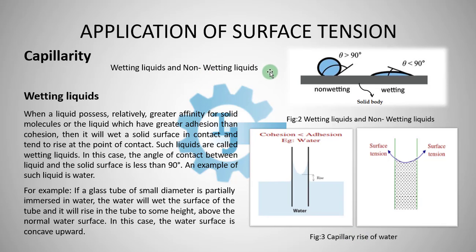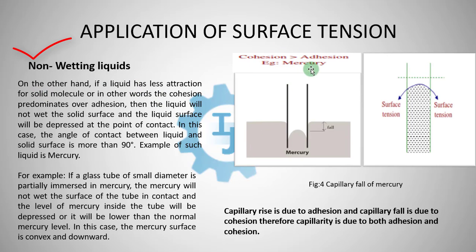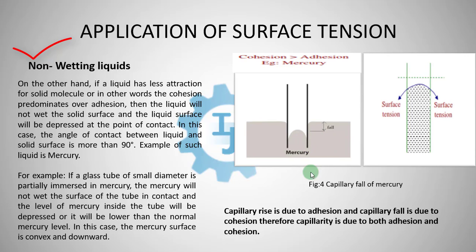Next, we will discuss non-wetting liquids. In case of non-wetting liquids, the cohesion is more than adhesion, and the angle of contact between the liquid and solid surface is more than 90 degrees — an obtuse angle. If we put a glass tube of small diameter partially immersed in mercury, the mercury will not wet the surface of the tube in contact, and the level of mercury inside the tube will be depressed or lower than the normal mercury level. So we can see a fall of mercury in case of non-wetting liquids. Mercury is an example of a non-wetting liquid. This involves a convex meniscus and is called capillary fall. The angle of contact is more than 90 degrees — an obtuse angle.